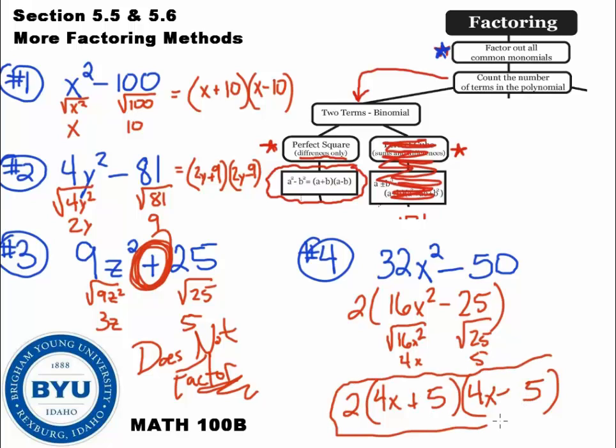Now that one, you may have said, if you said that one does not factor, be careful. That means you failed to apply rule number one, which is to take out the common stuff. You always got to take out the common stuff because at first glance, you say, hey, 32 and 50, those aren't perfect squares. You can't, they don't have a square root. And so some people would stop right there and say that this does not factor. But don't forget to take out that 2 because when you take out that 2,